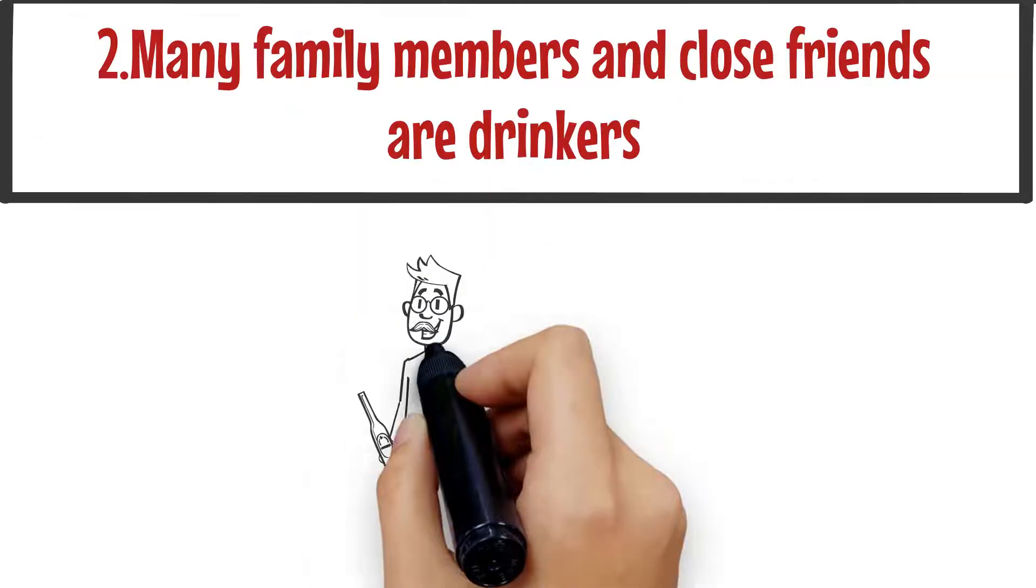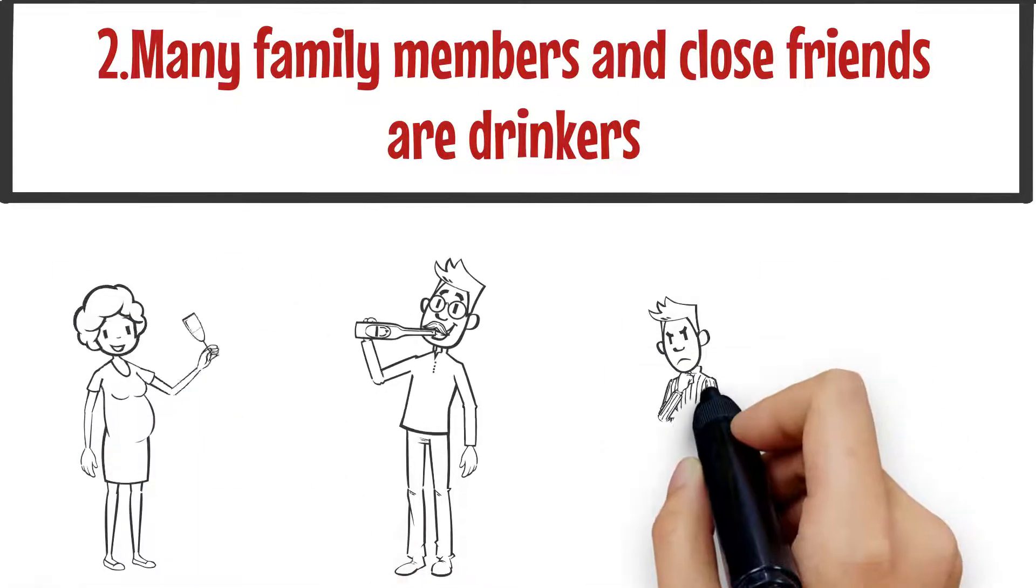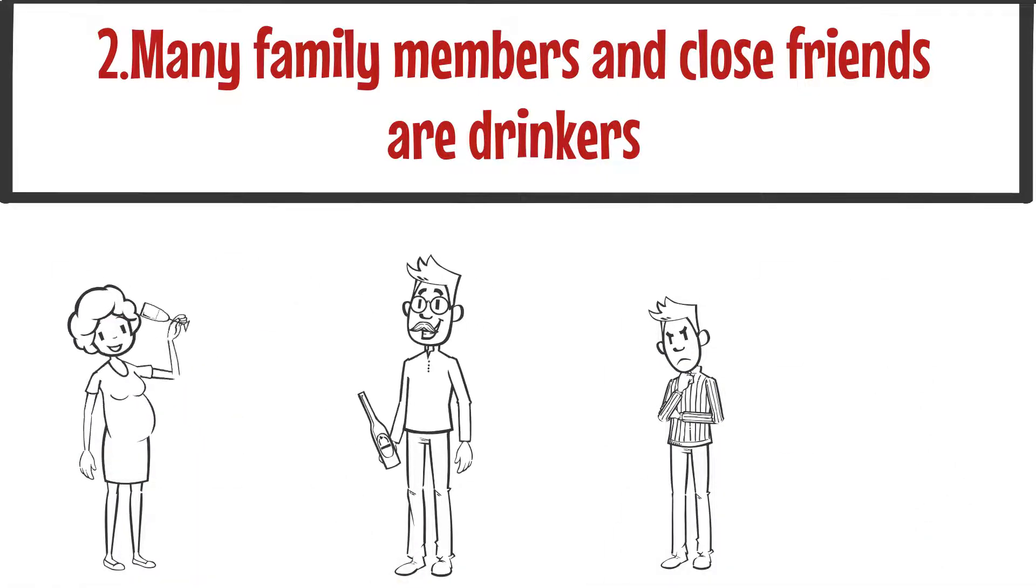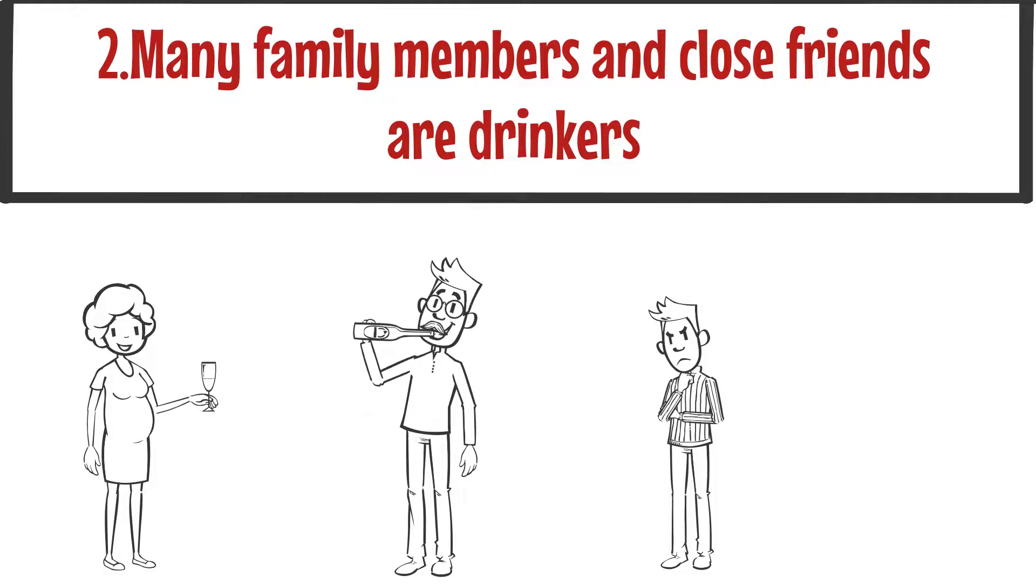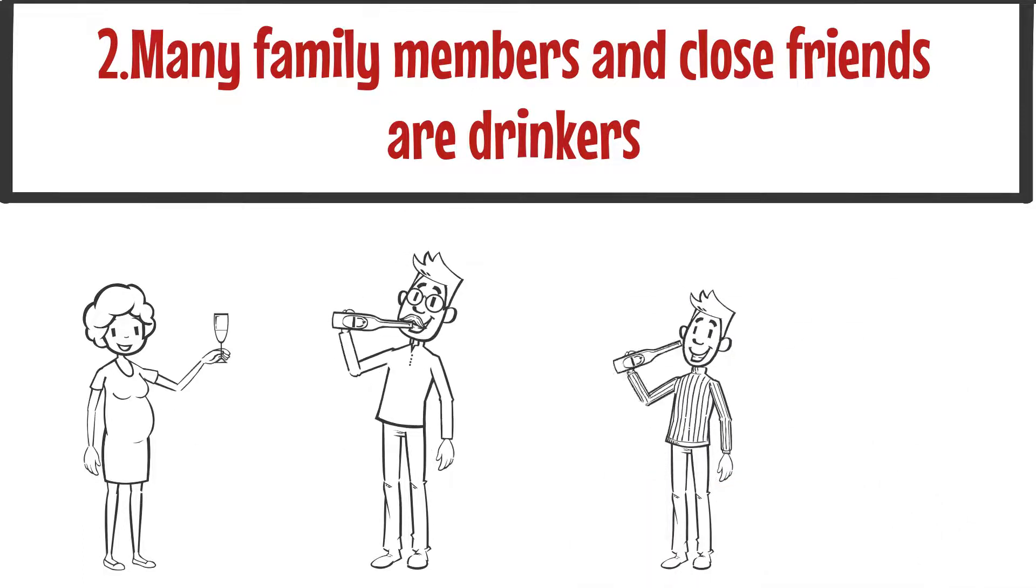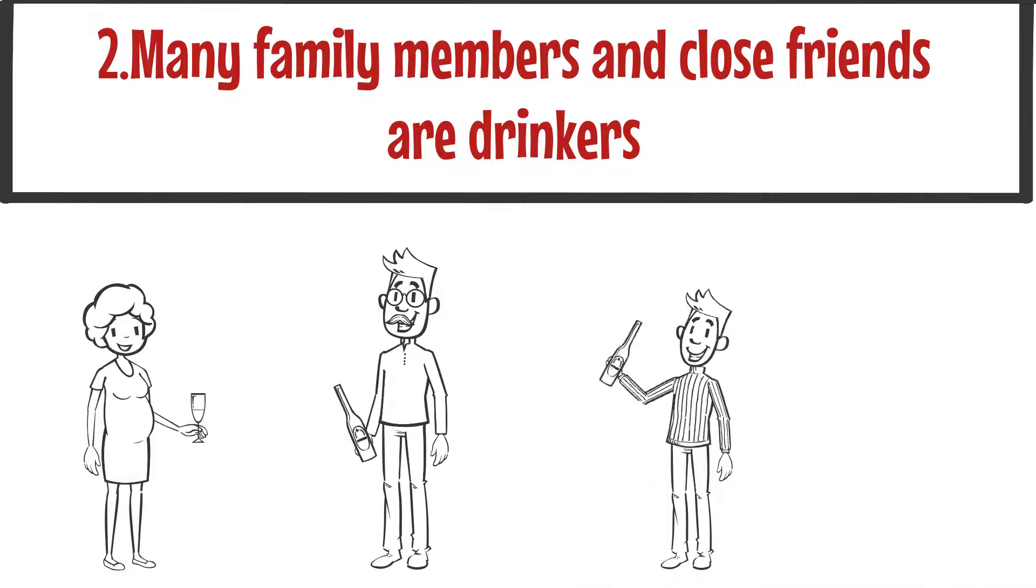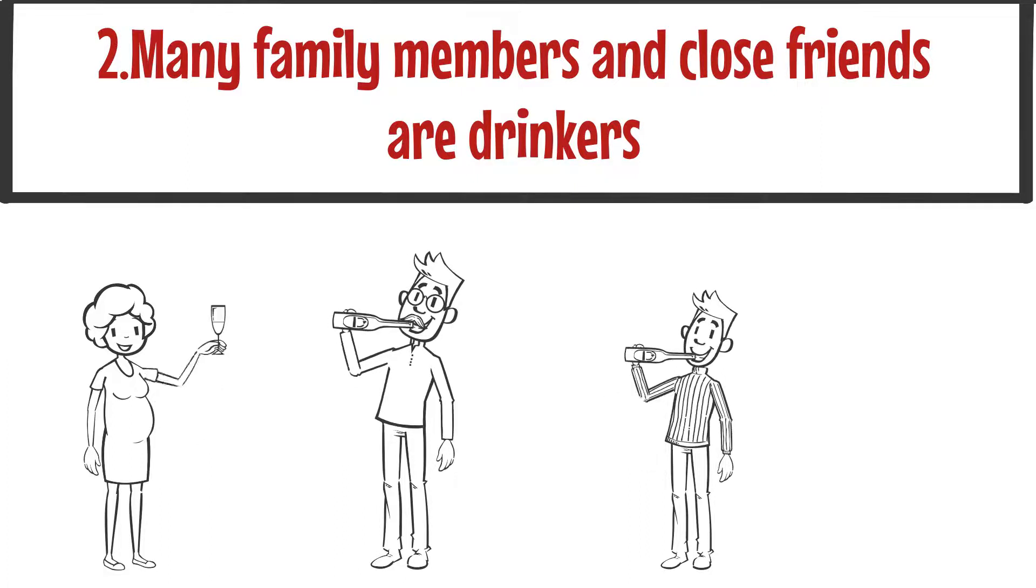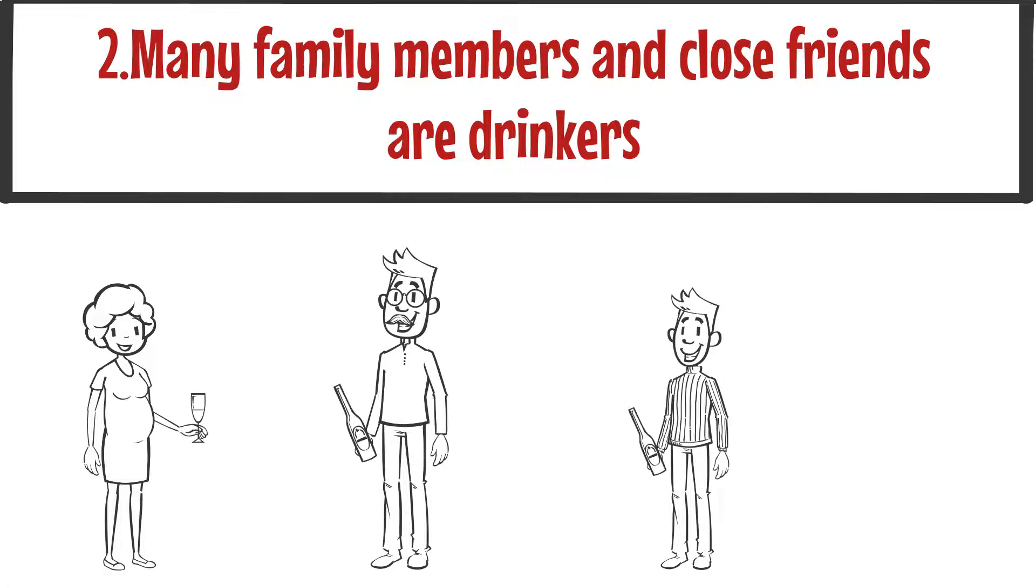Number two, many family members and close friends are drinkers. A family member with a drinking habit may be less cautious about alcoholism. They may allow their younger children to drink. Also, if a close friend who you see often is a drinker, you are more likely to be influenced by them.